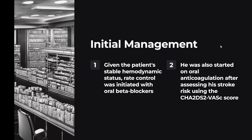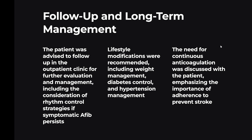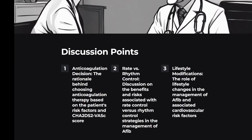Follow-up and long-term management: the patient was advised to follow up in the outpatient clinic for further evaluation, including consideration of rhythm control strategies if symptomatic AFib persists. Lifestyle modifications recommended include weight management, diabetes control, and hypertension management. The need for continuous anticoagulation was discussed, emphasizing the importance of adherence to prevent stroke. Discussion points included anticoagulation decision-making based on the CHA2DS2-VASc score and the benefits and risks of rate versus rhythm control strategies.